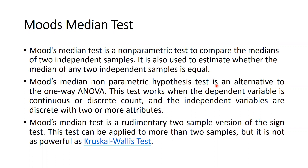Non-parametric Mood's Median Test is used to compare the medians of two independent samples. It is also used to estimate whether the medians of any two independent samples are equal. So when we have taken independent samples from two different populations, we can check whether the medians of these two independent samples are equal or not.